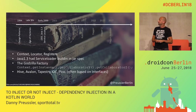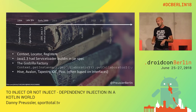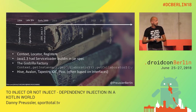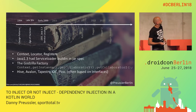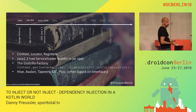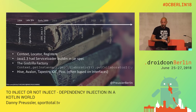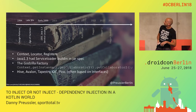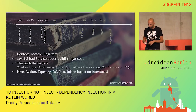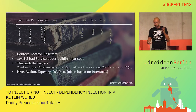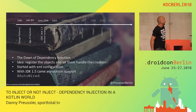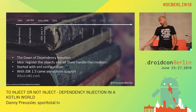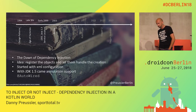The first dependency injection frameworks popped up. They weren't called that back then — they were called Inversion of Control Containers. Then at some point Martin Fowler came up with the name Dependency Injection and made it famous. 2003 was the dawn of dependency injection — Spring came.